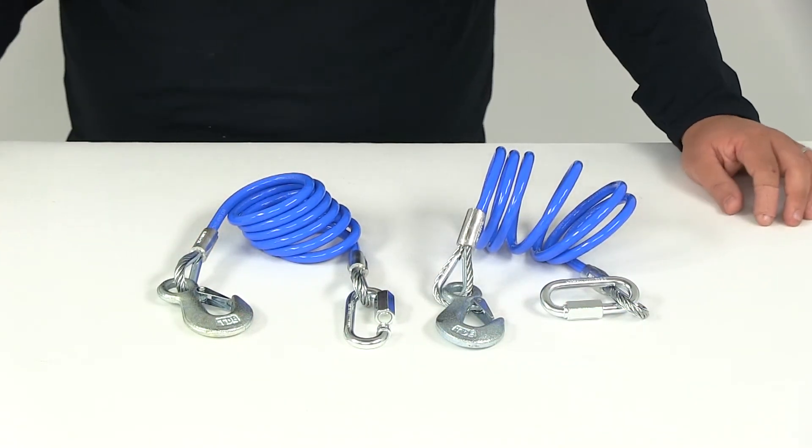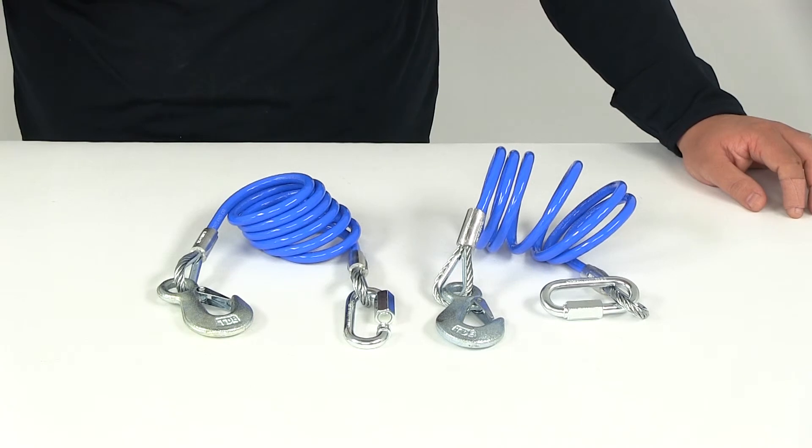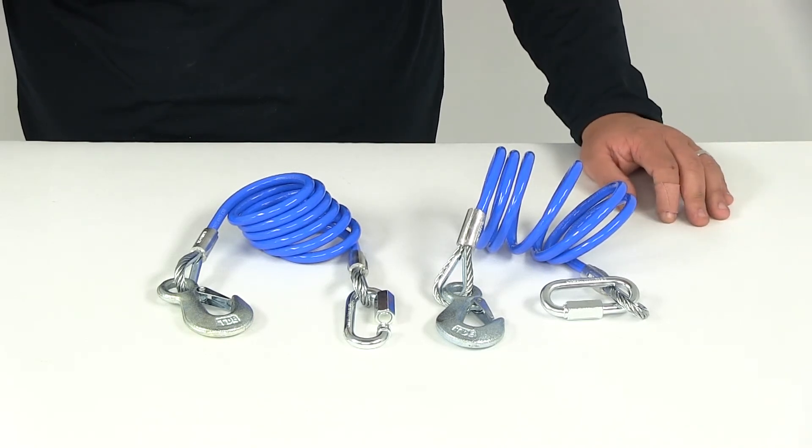That's it for the review of part number RM-643, the Roadmaster 68 inch single hook coiled safety cables.